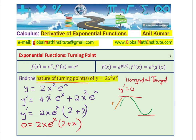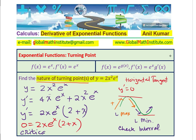We move to the next page to find the critical points of 2x e to the power of x times (2 plus x). Since e to the power of x is never zero, the derivative equals zero when 2x equals zero or (2 plus x) equals zero, giving x equals 0 and x equals minus 2. These are the two x values where the gradient is zero.